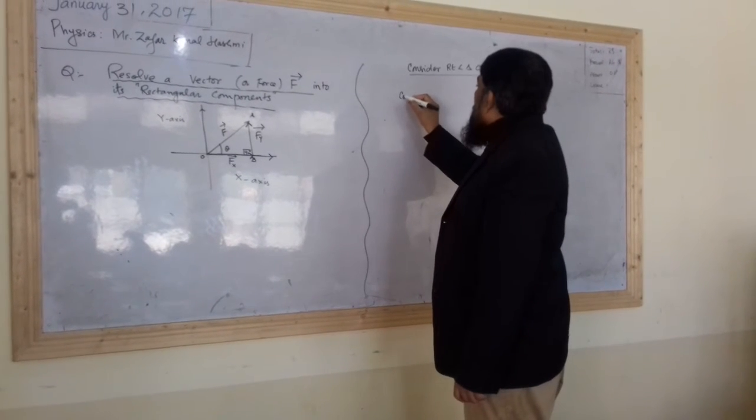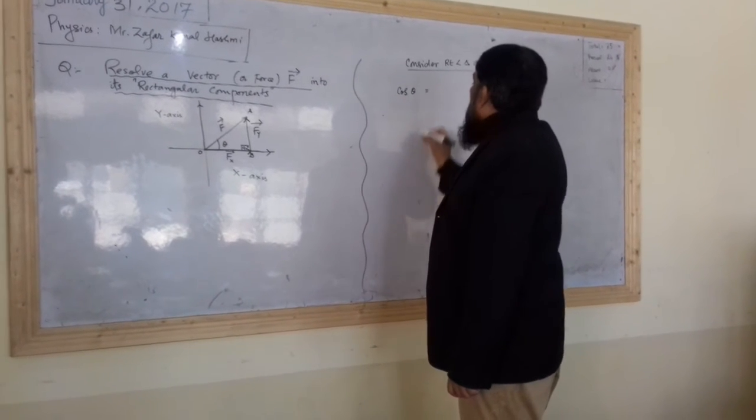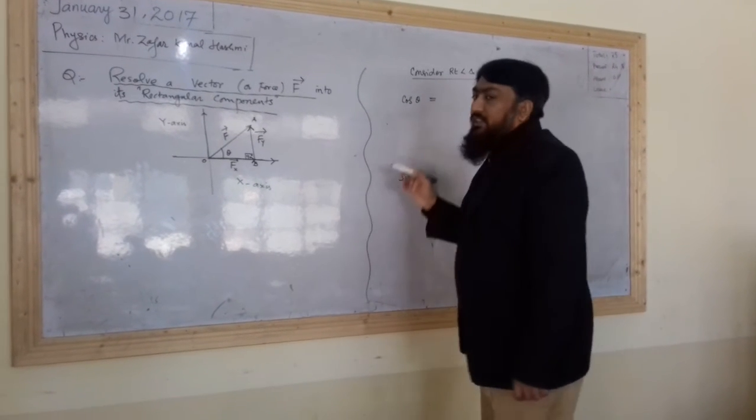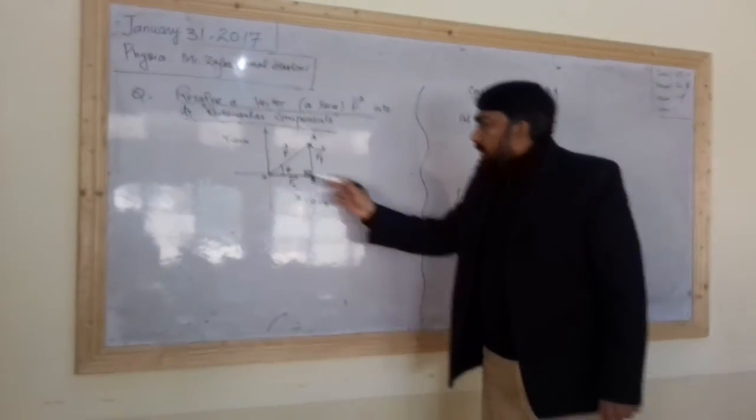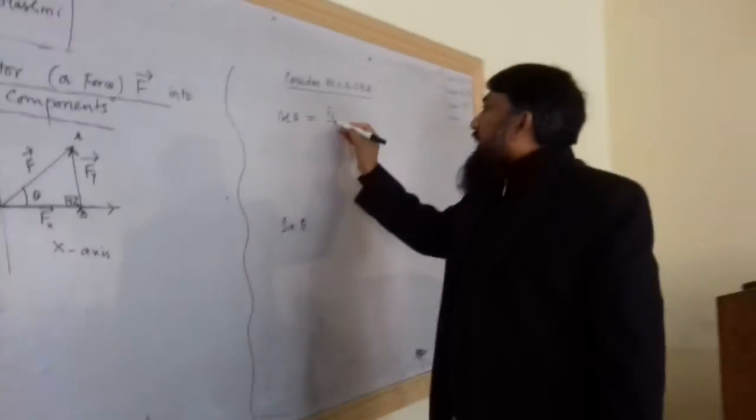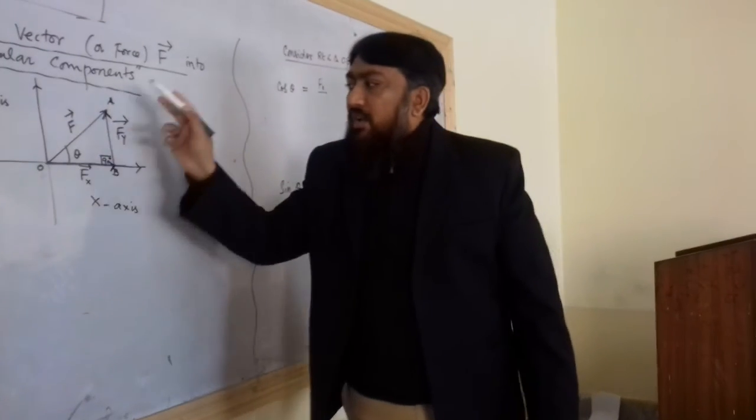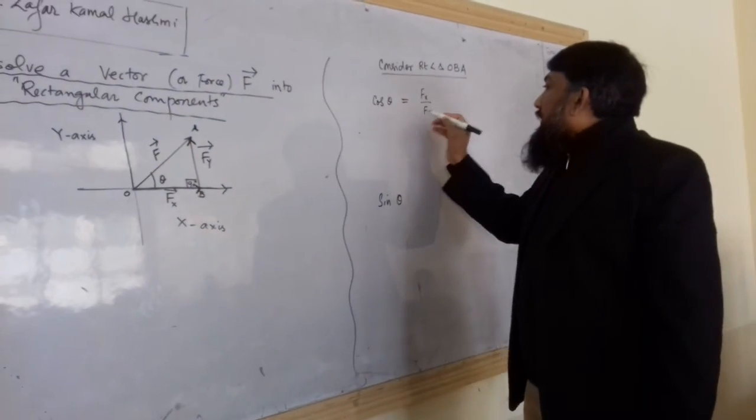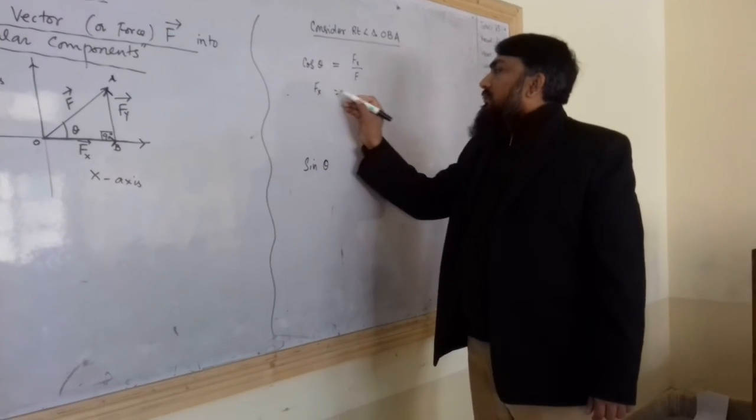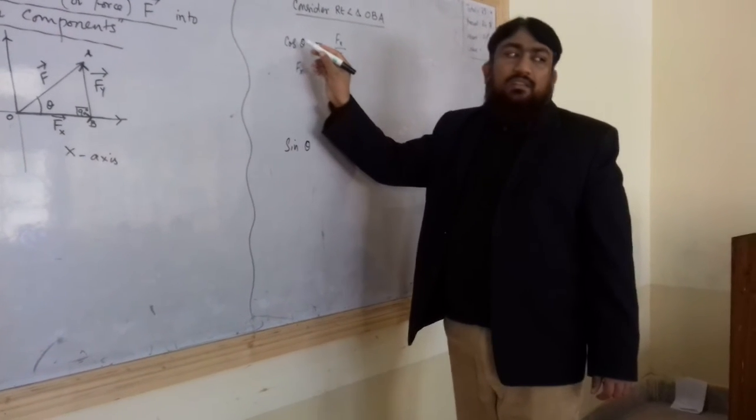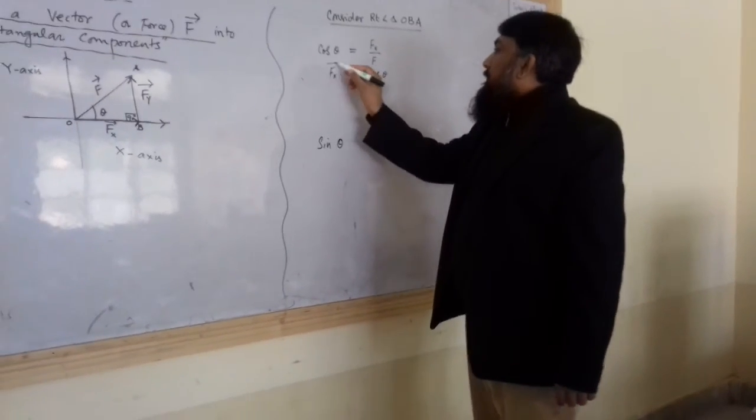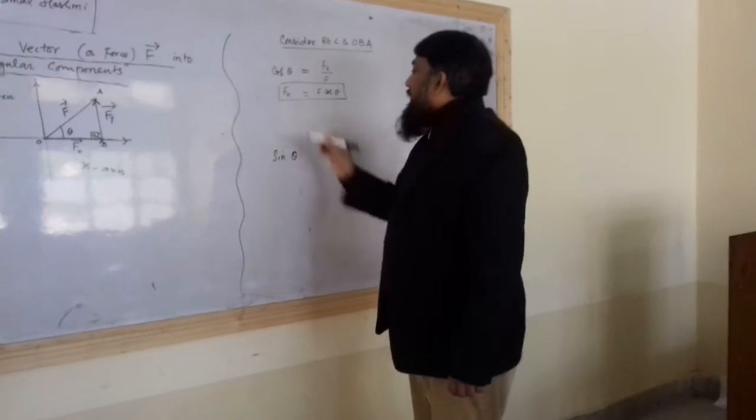I will apply simply two ratios. First, cos theta and second, sin theta. We know that cos theta is currently base over hypotenuse. Base is your base Fx, and here is your hypotenuse F. And Fx is equal to, this is divided here, it will be multiplied on that side, so it will be F cos theta. Is that clear? Yes, clear.